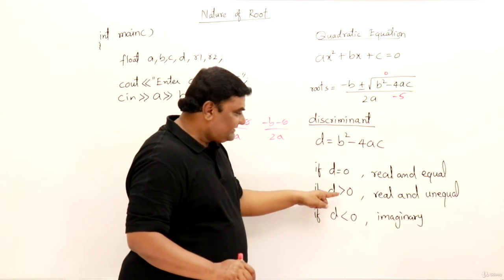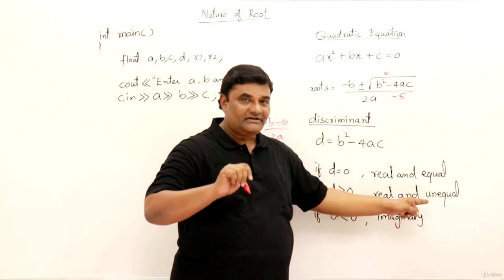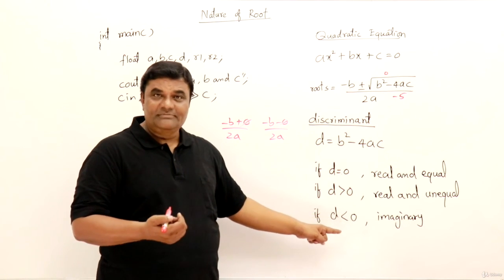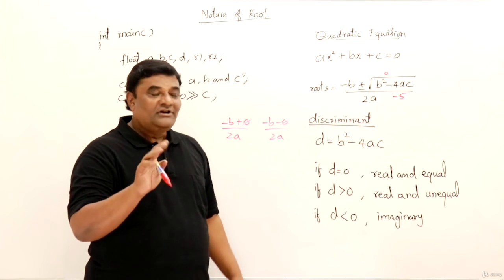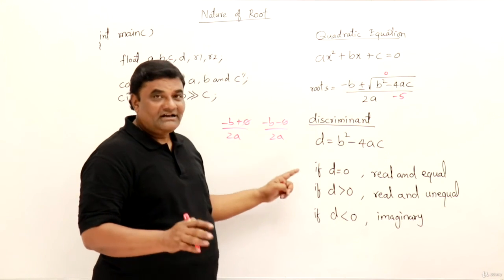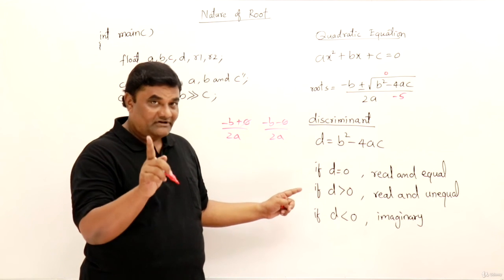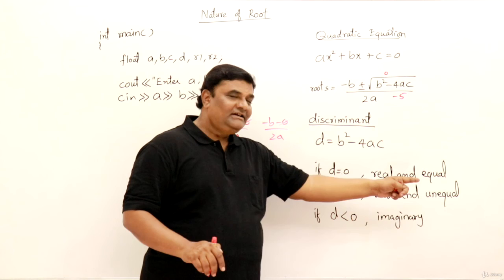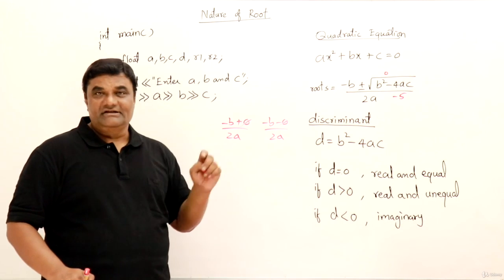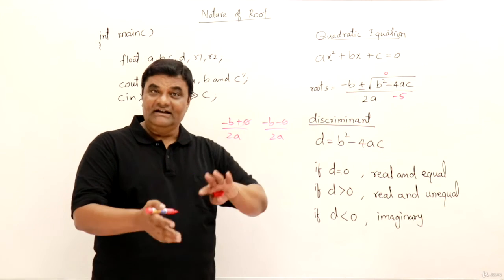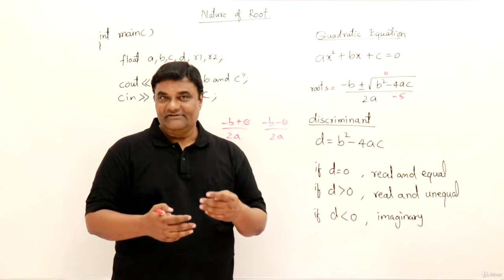Now if that d is 0, roots are real and also equal. And if d is greater than 0 means they are real but they are not equal, they will be different. Third one. If d is less than 0 means they are not real, they are imaginary. So if you have any quadratic equation, there are three different natures of roots of a quadratic equation. They may be real and equal, they may be real and unequal, or they may be imaginary. So if else, then if else, like this we have cases here. So we have to do nested if. So let us write the program directly.